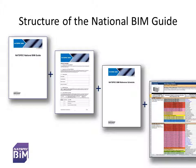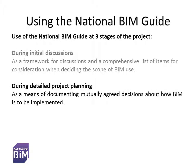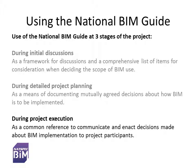So, how is the National BIM Guide meant to be used in practice? It is not intended that the National BIM Guide be simply handed to a project team as a standard to be followed. It is intended to be used broadly in three ways during different stages of the project. During initial discussions between project stakeholders, it provides a framework for discussions and a comprehensive list of items for consideration when deciding the scope of BIM use on the project — for example, a lead consultant could send it to the client for this purpose. It is at this point that the National BIM Guide fulfils its primary purpose: to assist stakeholders to clarify the BIM requirements. During the project planning stages and prior to project commencement, it provides a means of documenting mutually agreed decisions about how BIM is to be implemented. Then, during the execution of the project, it provides a common reference to communicate and enact decisions made about BIM implementation to project participants.